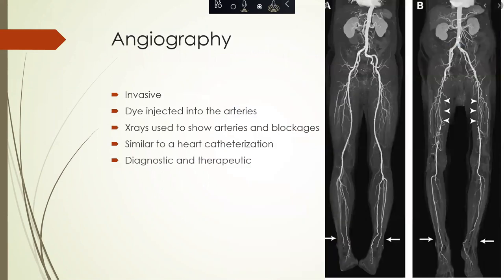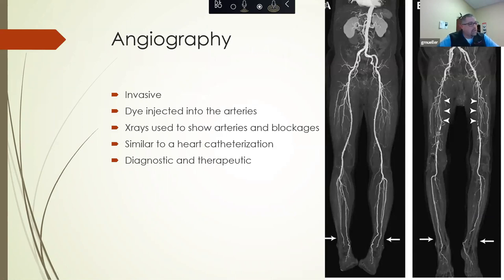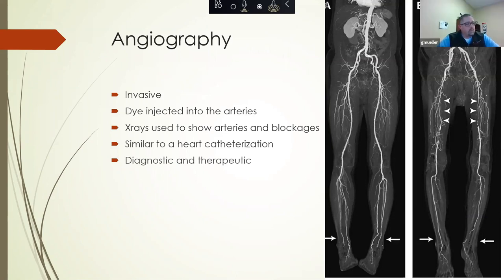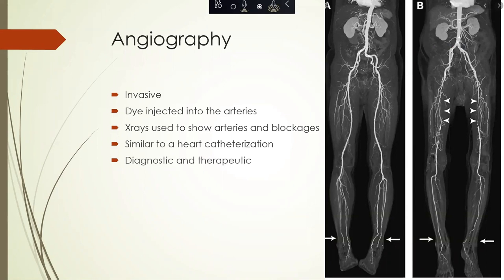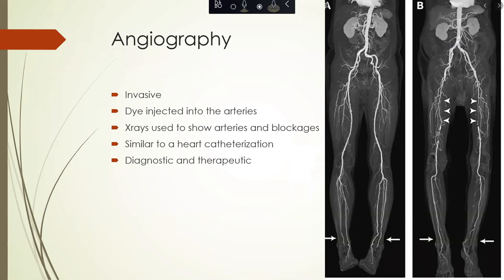Lastly is angiography, which is invasive and done typically in a hospital. It's very similar to a heart catheterization. Dye, or contrast, is injected into your arteries, and we use x-ray to show the arteries light up so we are able to figure out where the blockages are. The best part about angiography is not only is it diagnostic, but it is therapeutic — you are able to find the blockage and potentially fix it at the same time.